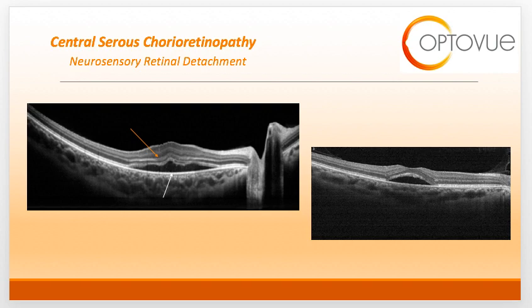The borders of the detachment may be regular, as seen on the right-hand scan, or irregular, as seen on the left-hand scan. It is important to remember that with CSR, the leakage occurs above the RPE. This will be important when we discuss differentiating CSR from other entities.